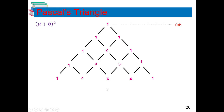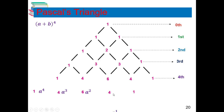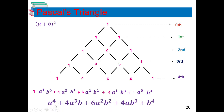So for (A + B)⁴ using Pascal's Triangle: the 4th row coefficients are 1, 4, 6, 4, 1. The powers of A decrease: A⁴, A³, A², A¹, A⁰ (which equals 1). The powers of B increase: B⁰, B¹, B², B³, B⁴. So the expansion is: A⁴ + 4A³B + 6A²B² + 4AB³ + B⁴.